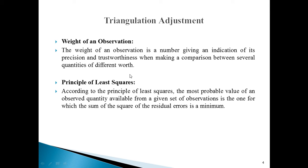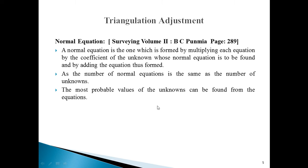According to the principle of least squares, the most probable value of an observed quantity available from a given set of observations is the one for which the sum of squares of the residual errors is minimum.